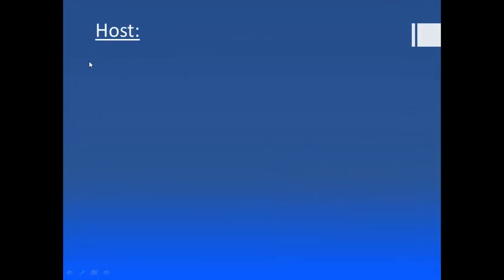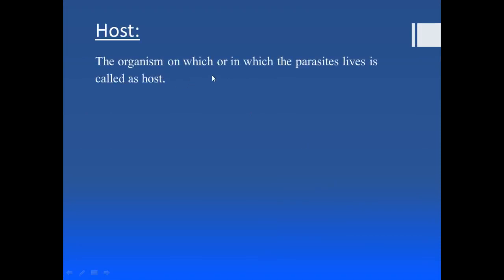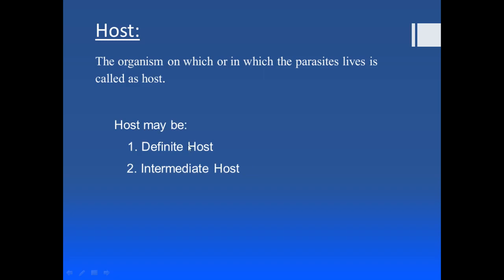Now let's move to the host. A host is that organism on which or in which the parasite lives. The host may be a definitive host or an intermediate host. A definitive host is one in which the sexual reproduction of the parasite takes place, whereas asexual reproduction takes place in the intermediate host. For example, Plasmodium reproduces asexually in the human body, making humans the intermediate host, while sexual reproduction takes place in the mosquito, making the mosquito the definitive host.